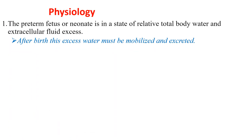The preterm fetus or neonate is in a state of relative total body water and extracellular fluid excess. In utero, there is a higher amount of fluid extracellularly, whereas after birth there is a higher amount of fluid intracellularly. So after birth, this excess extracellular fluid must be mobilized and excreted. There is a shift of fluid from extracellular predominance to intracellular predominance.